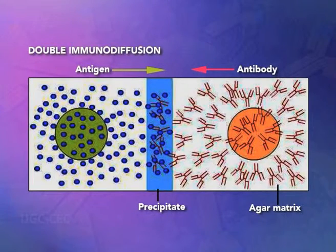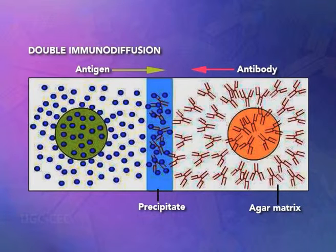In simple double immunodiffusion, the antibody is incorporated in gel above which is placed a column of plain agar, and the antigen is layered on top. The antigen and antibody move towards each other through the intervening column of plain agar and form a band of precipitate where they meet at optimum proportion. This technique is usually used to identify the presence of either antigen or antibody.